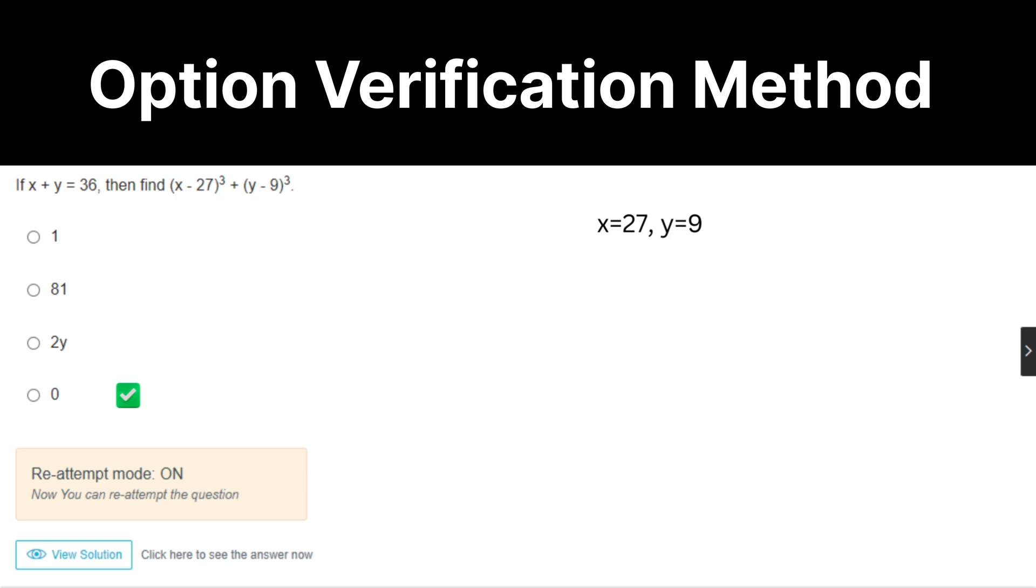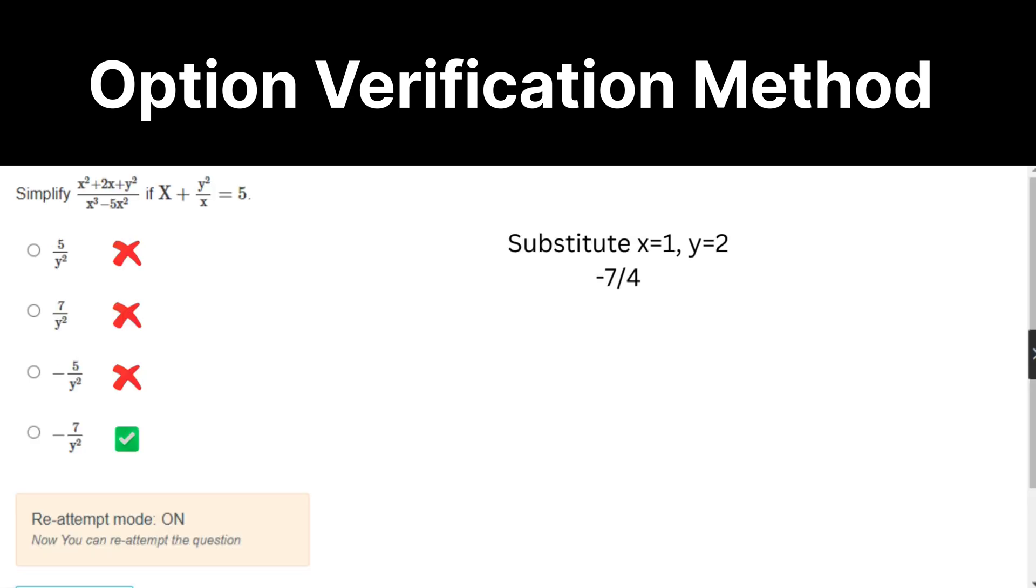Next, here substitute just x equal to 27, y equal to 9. It will be 0. Again, in algebra most of the time you usually substitute the values. Here, x equal to 1, y equal to 2 and verify the same in the options.